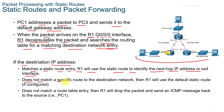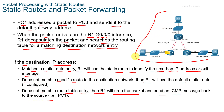If it does not match a specific route to the destination network, R1 will then use the default static route if it's configured. If it does not match a routing table entry at all, R1 will drop the packet and send an ICMP message back to the source. You could set this up in Packet Tracer and test these scenarios yourself, as you've likely done something similar with Packet Tracer labs already.